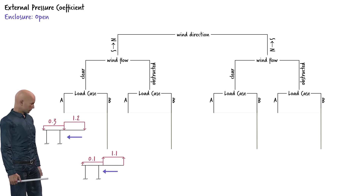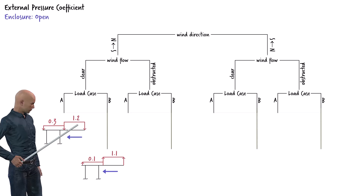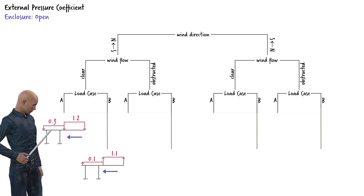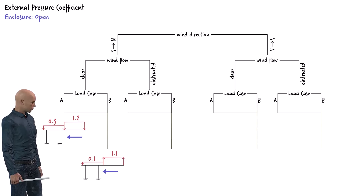Here are the pressure coefficients for the first two cases. Note that in each case, the wind pressure on the roof is divided into two zones: the windward side of the roof, the side facing the wind, and the leeward side of the roof, the side away from the wind. These variations are intended to capture the possible ways wind could load the structure.